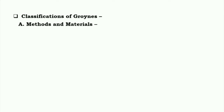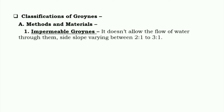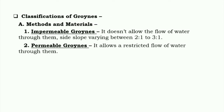The classification of groins — first, based on methods and materials. Impermeable groins do not allow the flow of water through them, with side slopes varying between 2:1 to 3:1. Permeable groins allow a restricted flow of water through them.